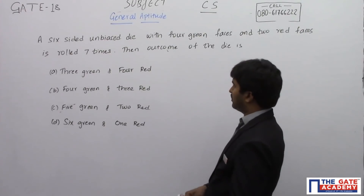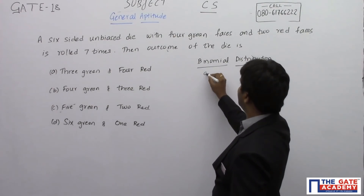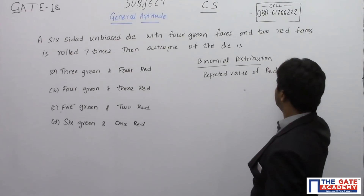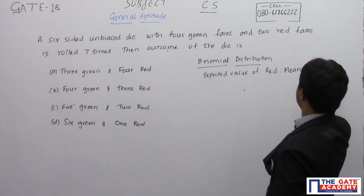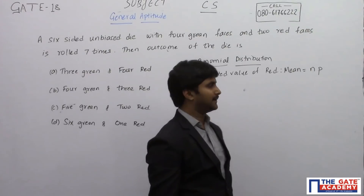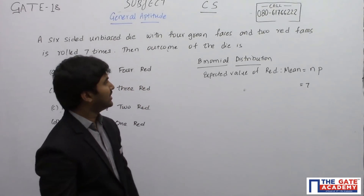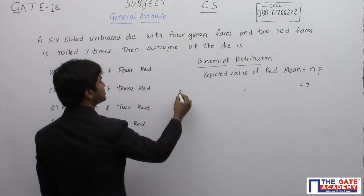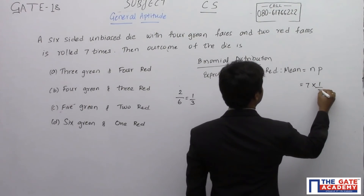We use the concept of binomial distribution. The expected value of red is given by the mean, which equals n multiplied by p. Here we are rolling it seven times, so n = 7. The probability of getting red when rolling once is two by six, since there are six faces out of which two are red — so it simplifies to one by three.